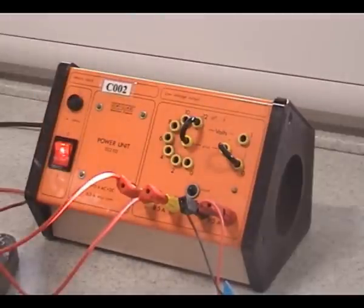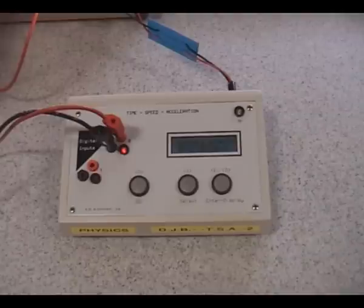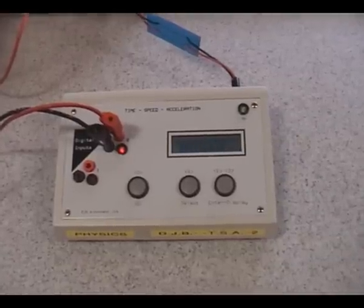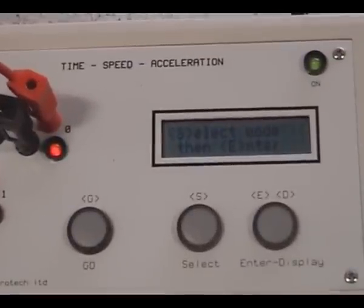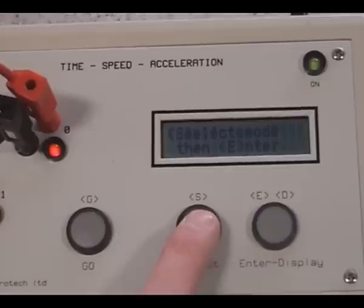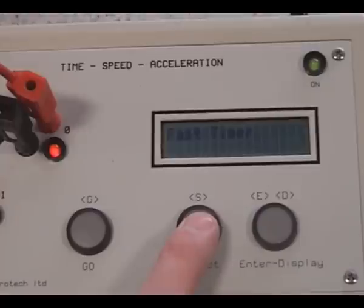Now we're going to use our light gate and TSA to measure speed. So first thing we're asked to do is to select the mode that we want. We want to select speed. So press the select button until you get to speed. And then press enter.